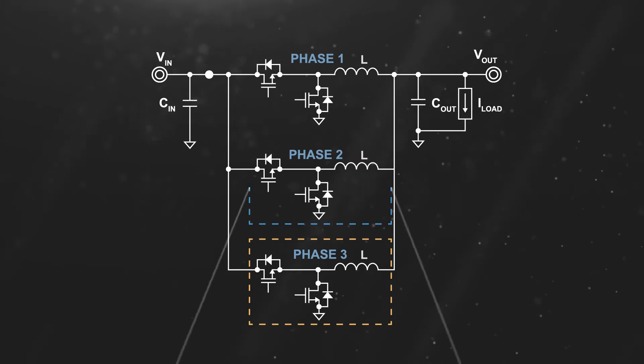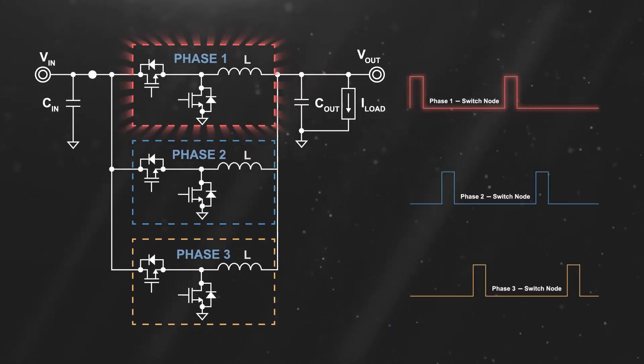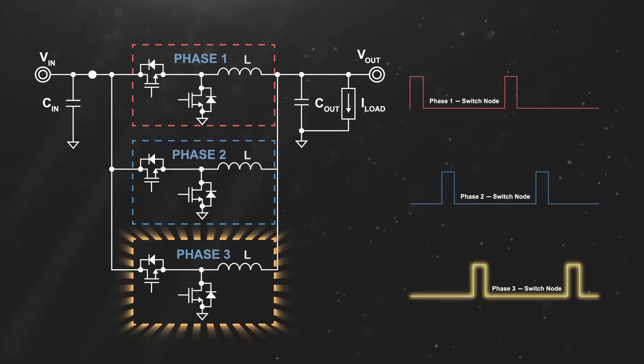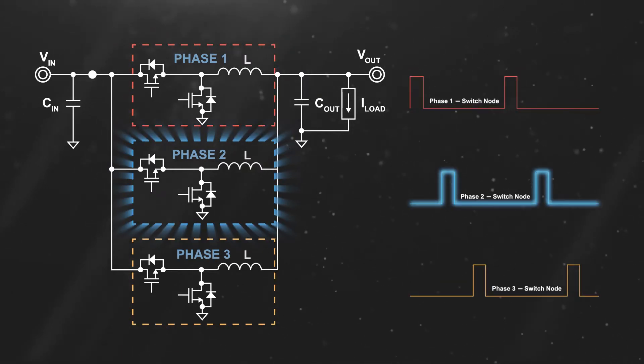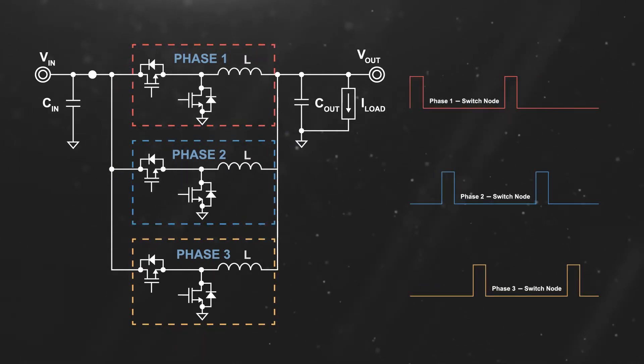These architectures divide the total power across multiple buck converters operating in parallel, with each converter switching out of phase from the others. This reduces the power per stage and results in improved efficiency, better transient response, lower component and board temperatures, and more design flexibility.